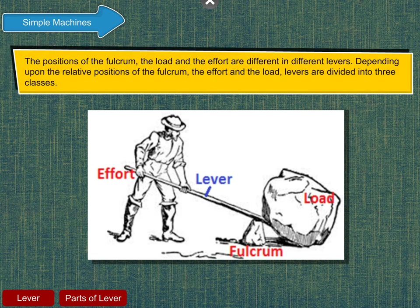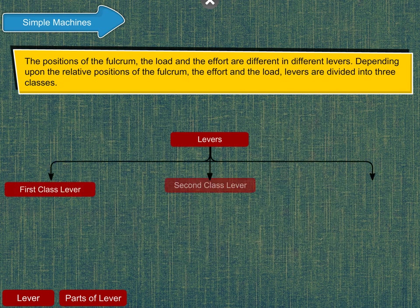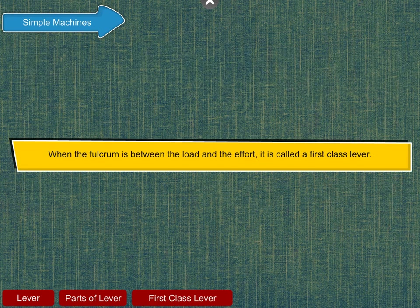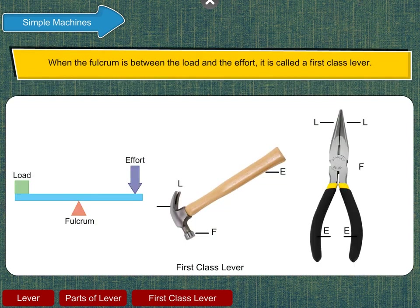The positions of the fulcrum, the load and the effort are different in different levers. Depending upon the relative positions of the fulcrum, the effort and the load, levers are divided into three classes. When the fulcrum is between the load and the effort, it is called a First Class Lever.